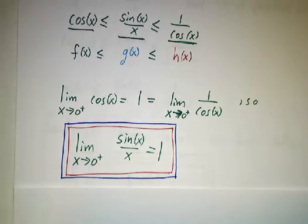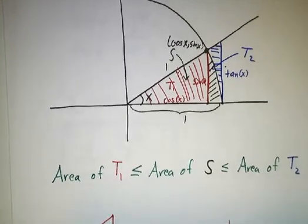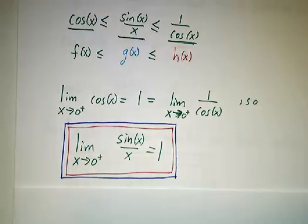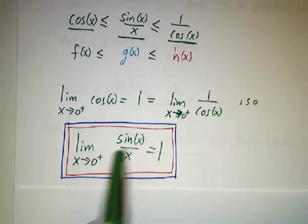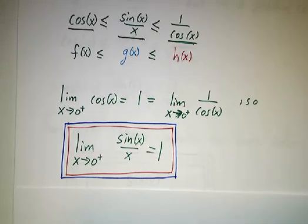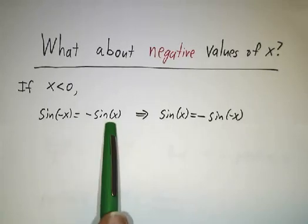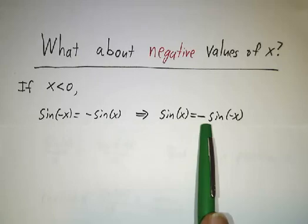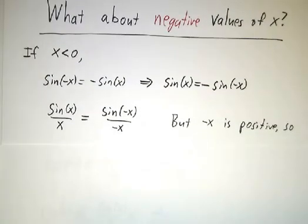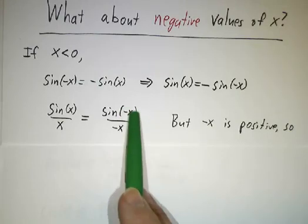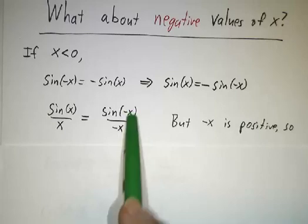But there's a caveat. When I drew my pictures, they only made sense if x was positive — we talked about having a sector of size x. So this argument is perfectly good for the limit as x approaches 0 from the positive side. But we still have to worry about what happens when x approaches 0 from the negative side — we've only done half the problem. We've shown the one-sided limit is 1. For negative x, we use the property that sin(−x) = −sin(x), or equivalently sin(x) = −sin(−x). Dividing both sides by x gives sin(x)/x = sin(−x)/(−x). But if x is negative, then −x is positive, so we can draw the same pictures as before only with −x instead of x.